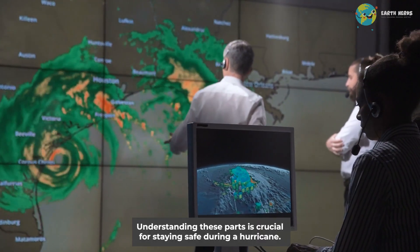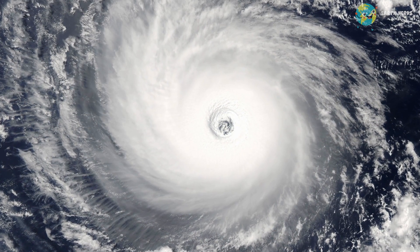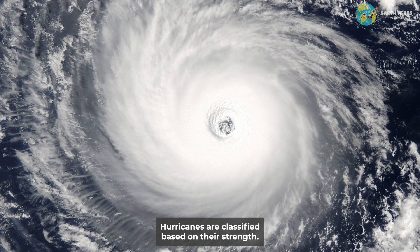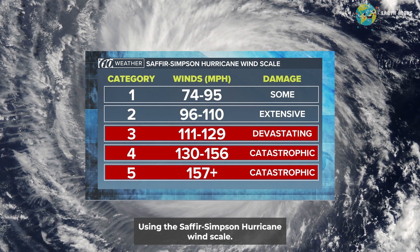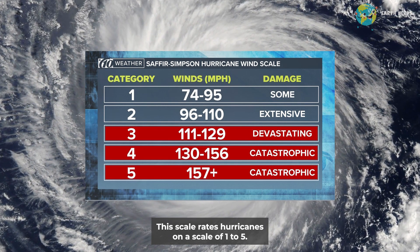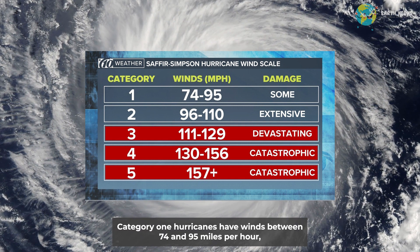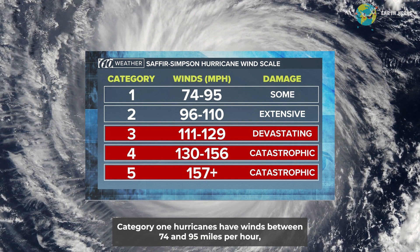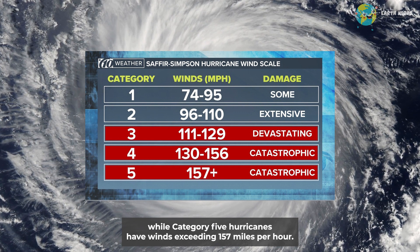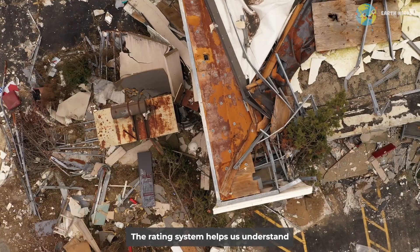Hurricanes are classified based on their strength using the Saffir-Simpson Hurricane Wind Scale. This scale rates hurricanes on a scale of one to five. Category one hurricanes have winds between 74 and 95 miles per hour, while category five hurricanes have winds exceeding 157 miles per hour. The rating system helps us understand the potential for damage and the force these storms possess.